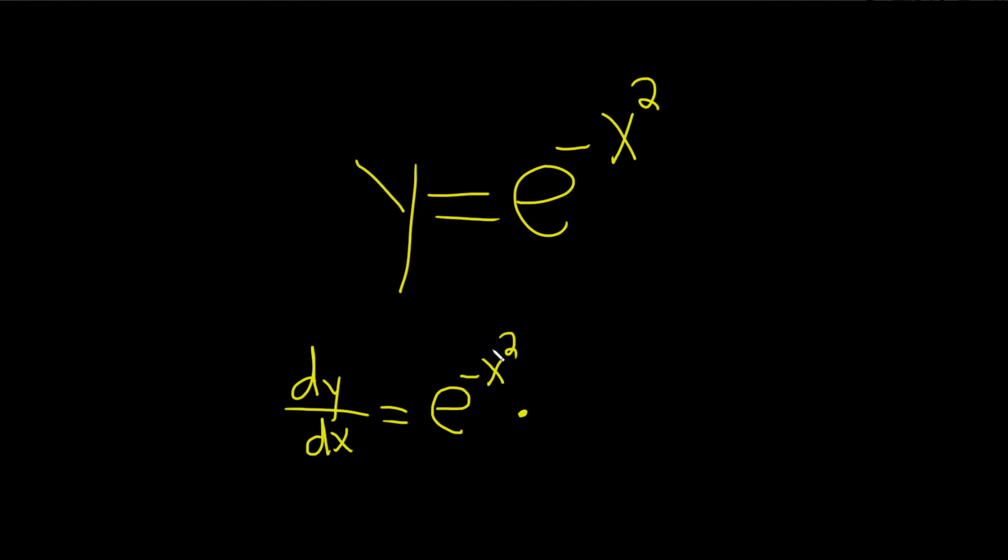So the derivative of negative x squared is simply negative 2x. You just bring down the 2, and you subtract 1 from the exponent.